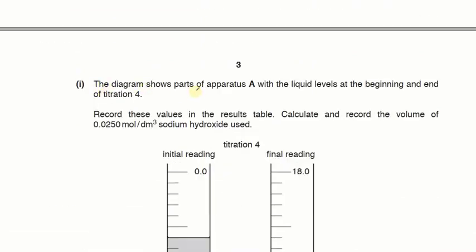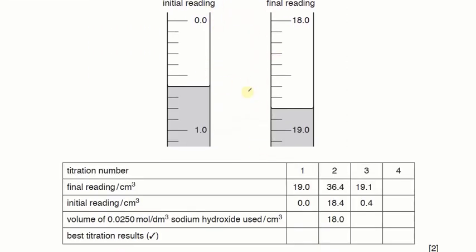So the diagram shows parts of apparatus A with the liquid levels at the beginning and end of titration 4. So we have to put in these values over here in the table. Titration 1, 2 and 3 are already filled, so we have to fill only titration 4. When you are reading the burette always read from less to more. So here is 18, don't read it 19.2, it's actually 18.8. So the final reading will be 18.8. While the initial reading is 0.6 it will be.